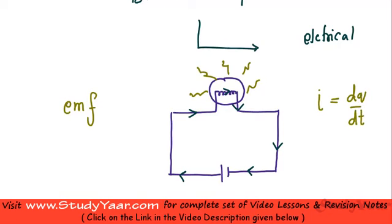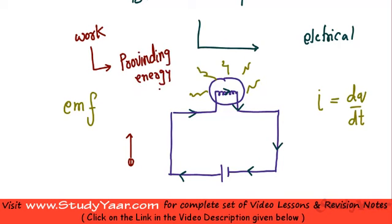Basically your charge must be flowing through this circuit. If charge is flowing or if charge is moving, obviously it is doing some work. And if it is doing some work, obviously someone is providing energy. Who is providing energy over here? Your energy is being provided by this voltage source, by this battery.